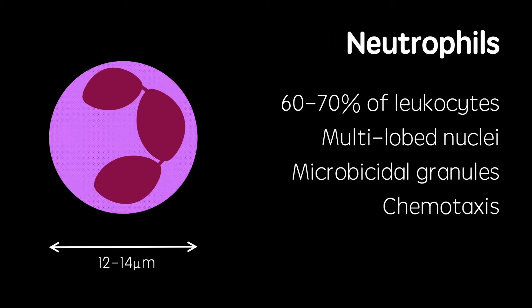Neutrophils are the most numerous type of white blood cell, making up 60 to 70%. These have multi-lobed nuclei, are between 12 and 14 micrometers wide, and contain large microbicidal granules which are used to kill engulfed bacteria and degrade extracellular matrices.